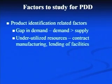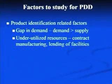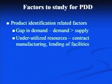Another possibility is that the company has some underutilized or unutilized resources. In that case, they may look for other manufacturers who can use those resources — either through contract manufacturing, where we manufacture other companies' products using our underutilized resources, or by lending our facilities to other manufacturers. The basic idea is to make existing resources fully utilized so that the investment made on those facilities is fully recovered.